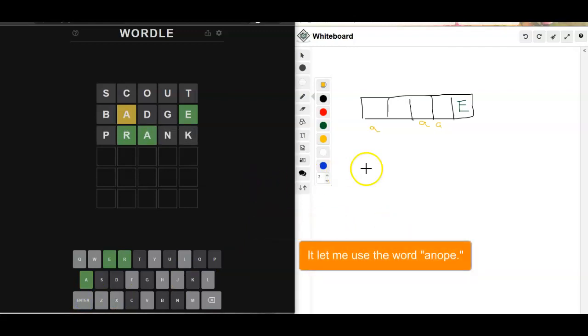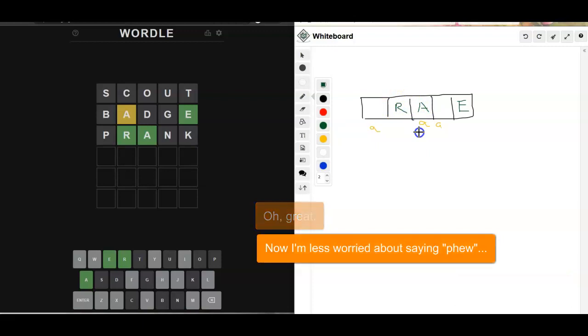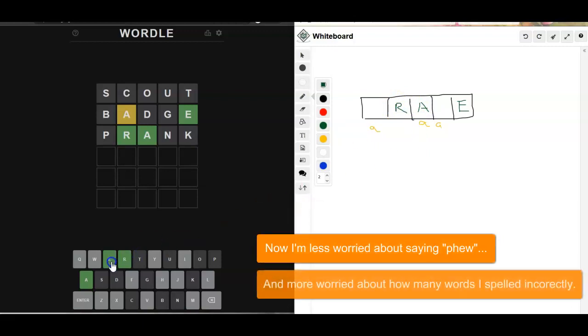Okay, so that gave us a lot, actually, because we now know that the A is here and we've got an R. All right, so let's see what else this could do. Q pretty much knocked out, right?